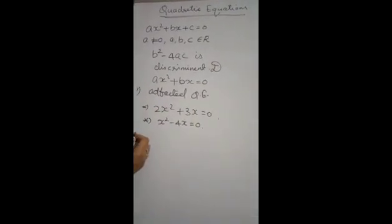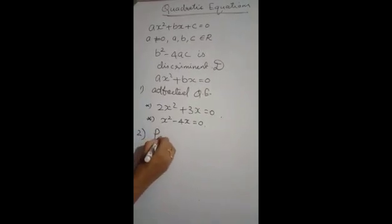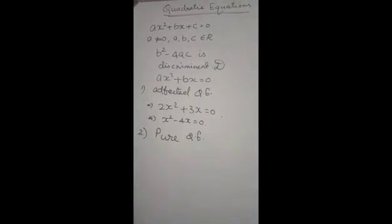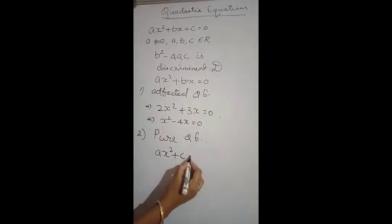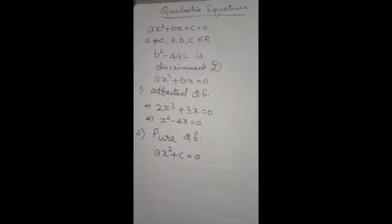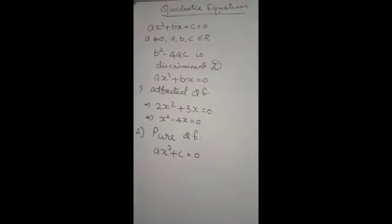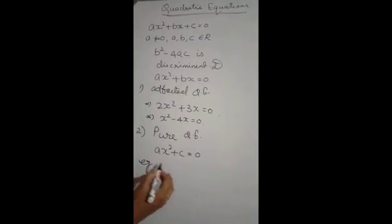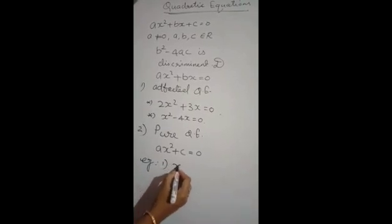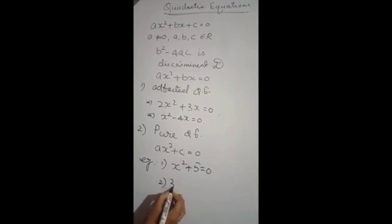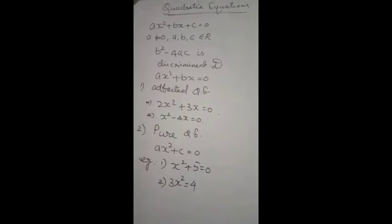The next type is the pure quadratic equation. The quadratic equation which is in the form ax squared plus c is equal to 0 is called a pure quadratic equation. Example: x squared plus 5 is equal to 0; 3x squared is equal to 4, etc. These are examples of the pure quadratic equation.